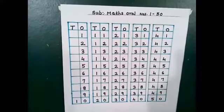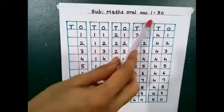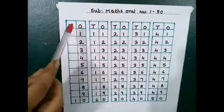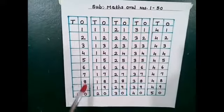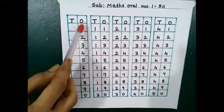Good morning children, today we are going to learn math's oral numbers 1 to 50. Now we are going to use the tens and ones column. Now 1 to 9 are 1 digit numbers, so we will start from the ones column.